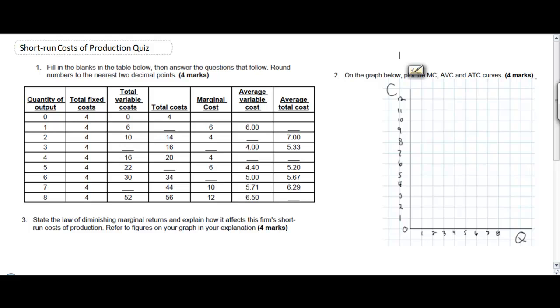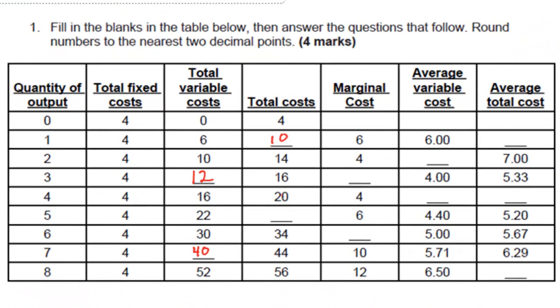So pause the video here and study this table. At first we're going to fill in the blank spots in this table which include the total variable costs, the total costs, the marginal costs, the average variable costs, and the average total costs of a firm in the short run.